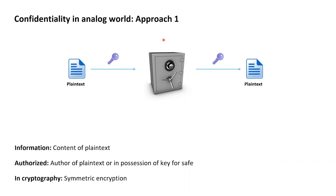If Alice later wants to retrieve her plaintext again, she needs to walk up to the safe, take the key to open the door, and can then retrieve her plaintext. What is the information in this example? The information is just the content of the plaintext. What does it mean to be authorized? To be authorized means to either be the author of the plaintext or to be in possession of the key to the safe.